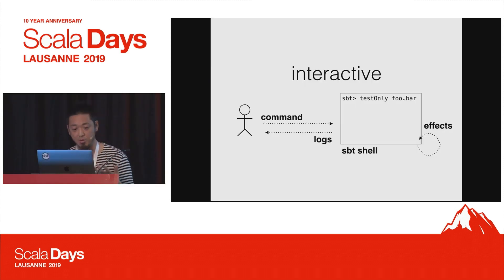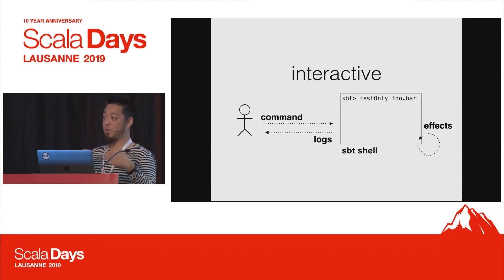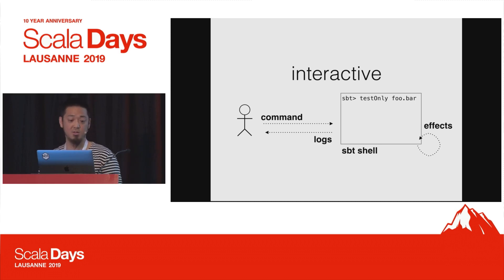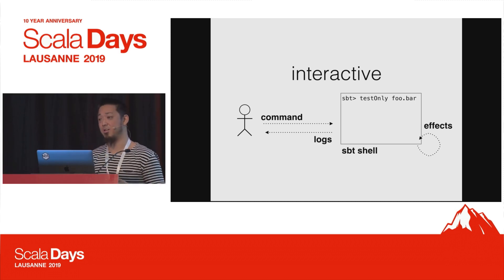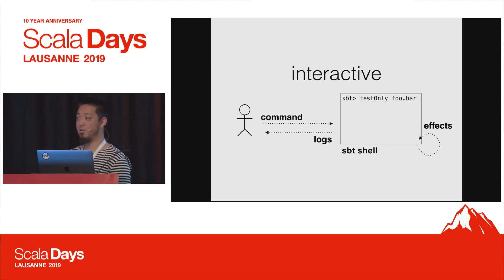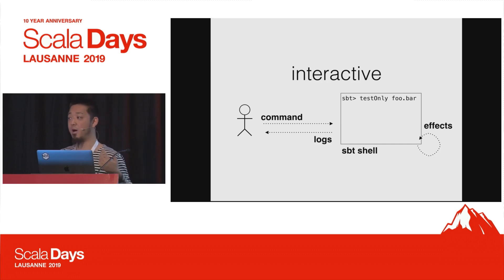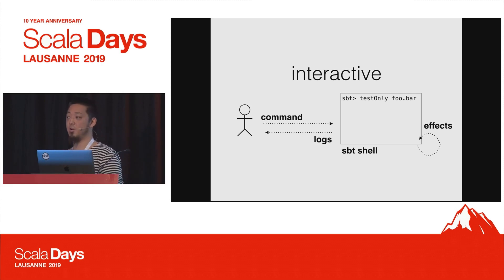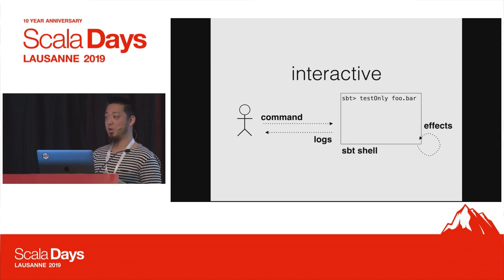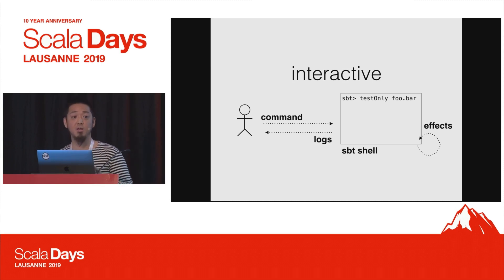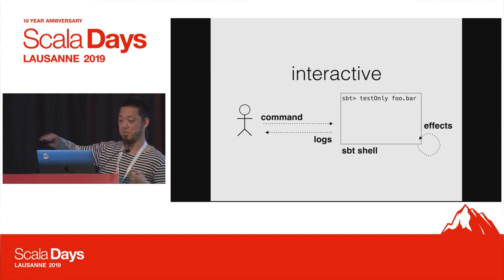So in this diagram: we have a shell, which is designed to ask exactly one question. You type a command, and effects happen on the side. It almost doesn't matter if the jar file is created — most of the time you're working with error messages, or you're running tests and looking at whether they passed or failed. Those are more interesting things, and they're presented as logs. You issue commands, you get back logs, and the effects happen on the side.